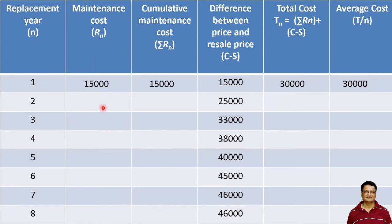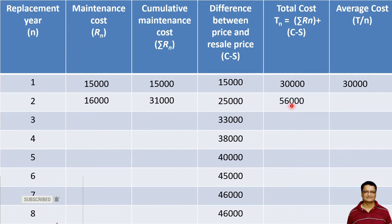In the second year, the maintenance cost is 16,000. The cumulative maintenance cost for two years is 15,000 plus 16,000, which equals 31,000. Adding the C minus S value gives a total cost of 56,000. Dividing by two — since we are interested in average cost per year — gives a value of 28,000. Note that the average cost is decreasing: 30,000 for year one and 28,000 for year two.